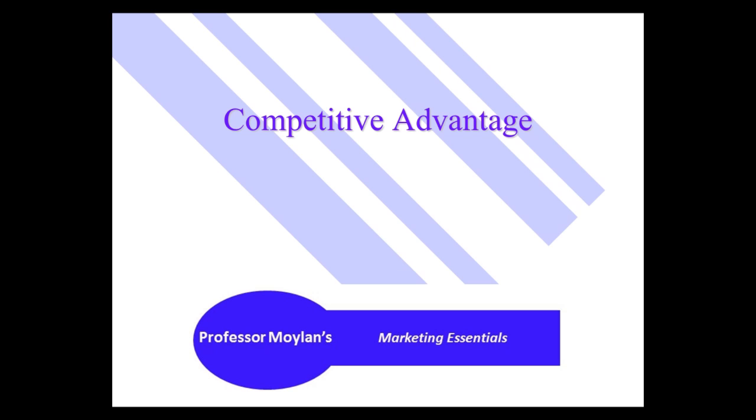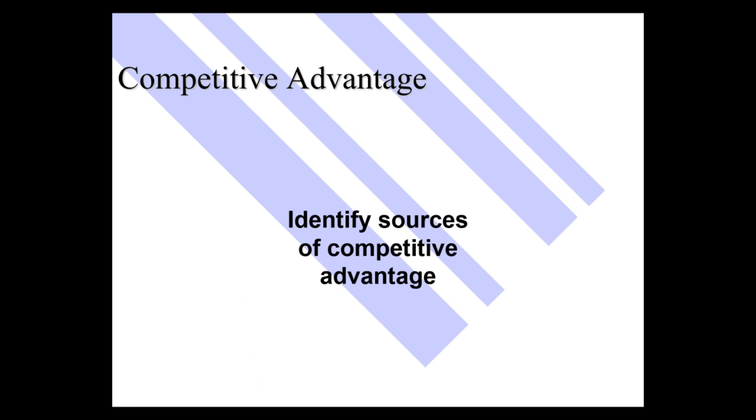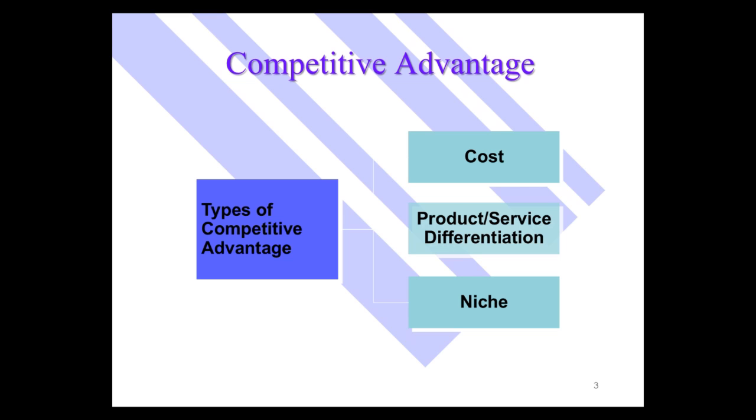You want to get a competitive advantage, something that you can do better than the competition. And the three generic types of competitive advantage are cost advantage, differentiation, and niche.